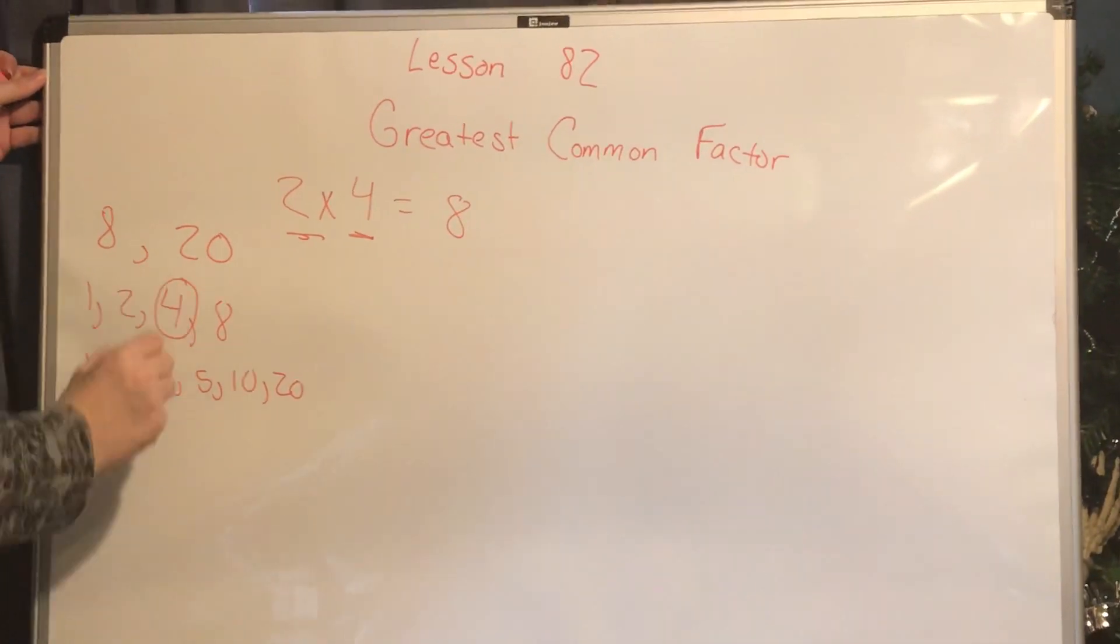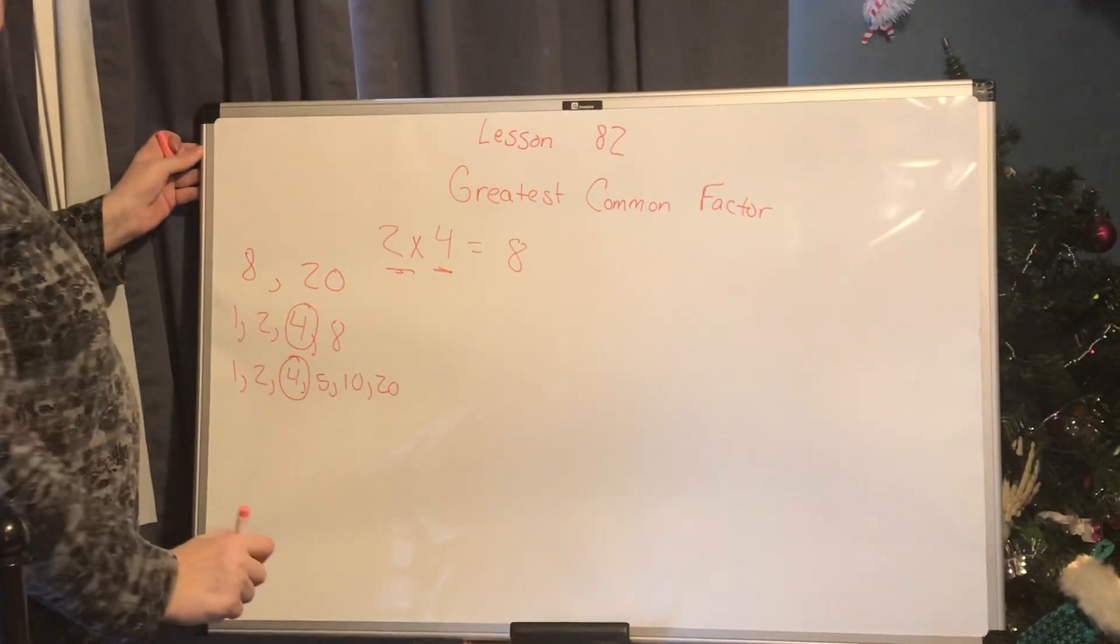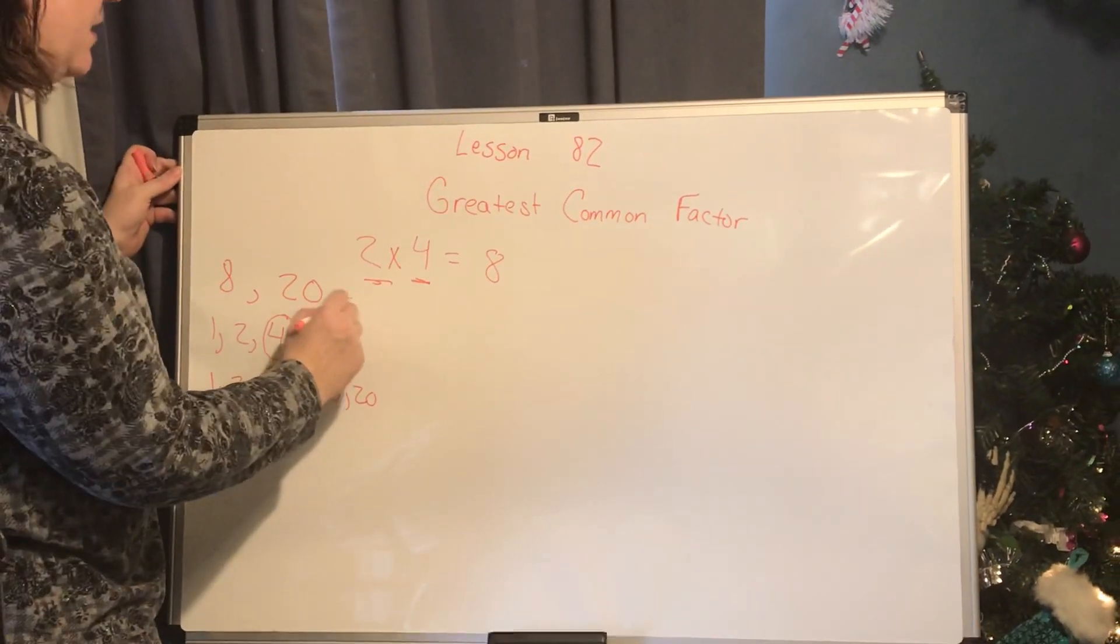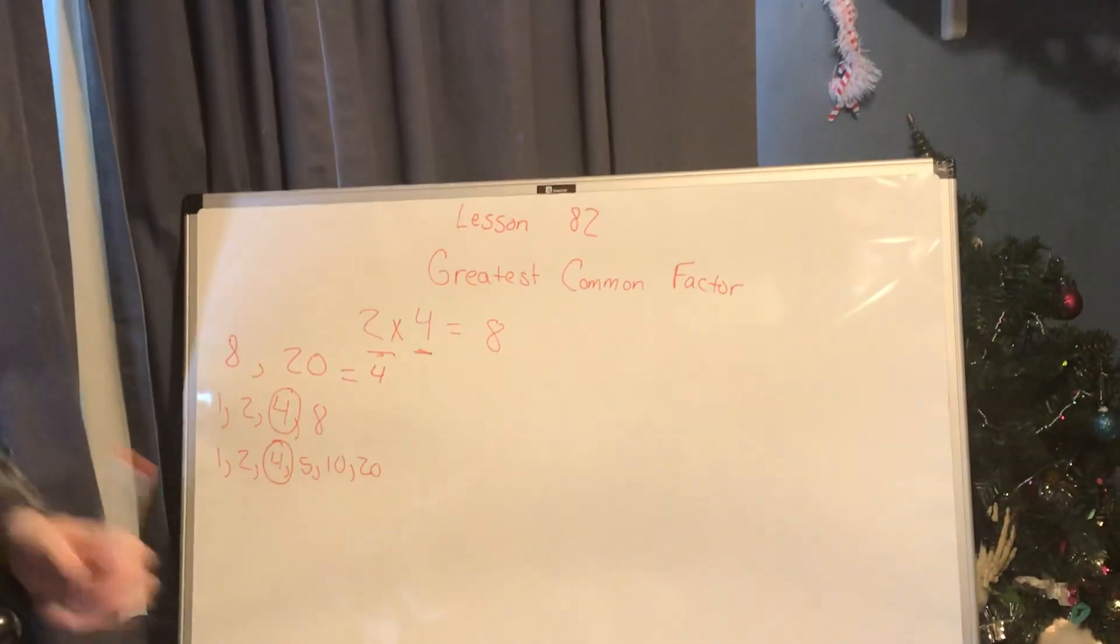And we see that that is 4. So the greatest common factor for 8 and 20 equals 4.